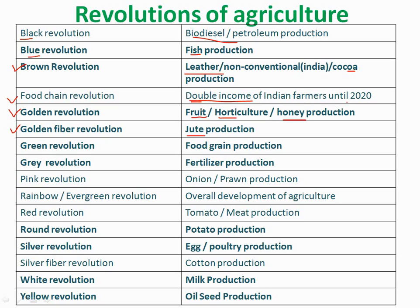Golden fiber revolution is related to jute production. Green revolution is related to food grain production. Gray revolution is related to fertilizer production. Pink revolution is related to onion or prawn production. Rainbow or evergreen revolution is related to the overall development of agriculture. Red revolution is related to tomato or meat production.